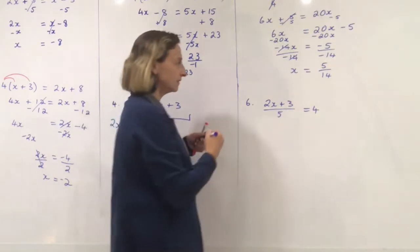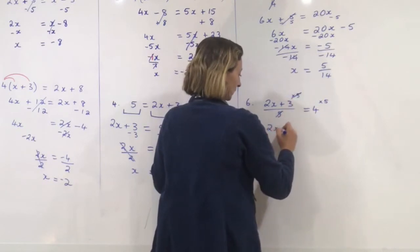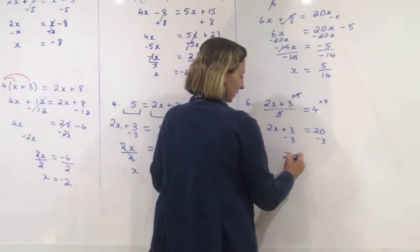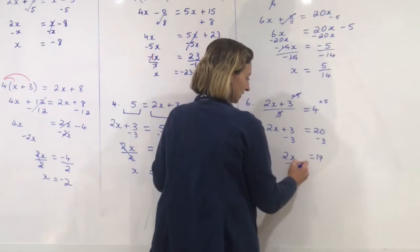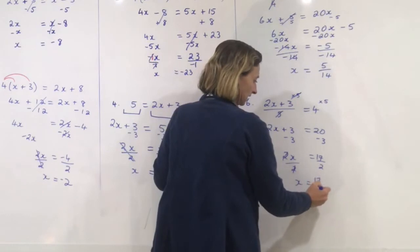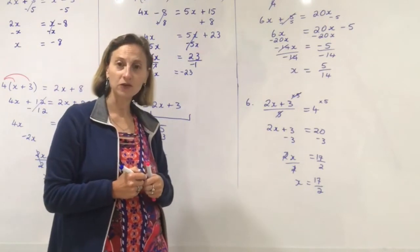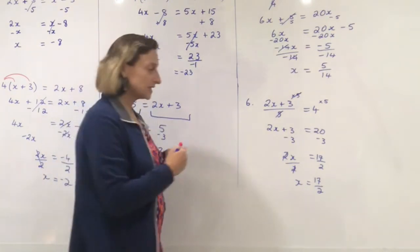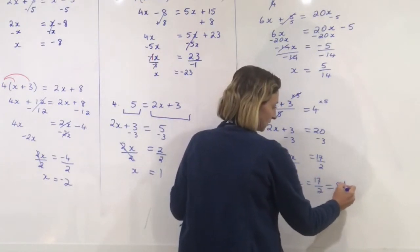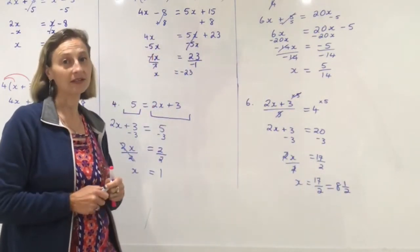And our last one. Times both sides by 5. 2x plus 3 equals 20. Let's move our 3 — 2x equals 17. Divide both sides by 2. Nothing goes into 2 and 17 evenly, so I can leave my answer as 17 over 2. Some of you might write it as 2 goes into 17 eight times with one remainder — if you wrote 8 and a half or even 8.5, any of those answers are perfect.